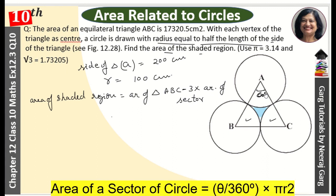So the area of triangle ABC was given 17320.5 minus thrice of area of sector is theta upon 360. Theta here is 60 upon 360 into pi r squared.